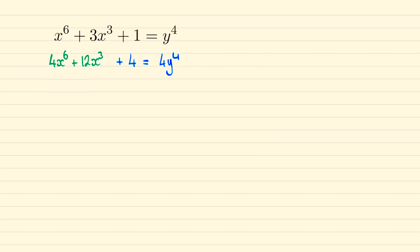This will allow us to complete the square on the bit in green, so we can rewrite that as (2x³ + 3)² minus 9. Now we can rewrite this as (2x³ + 3)² minus 4y⁴ equals 5. This is useful because we can realize this is the difference of two squares.